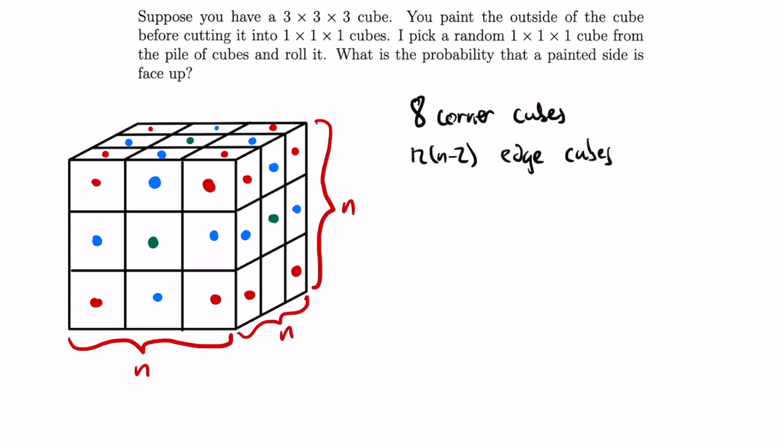To find the number of face cubes, which are the cubes that are on the face of the original cube but are neither corner cubes or edge cubes, we can notice that a cube has 6 faces, and that each face has n squared 1 by 1 by 1 cubes.